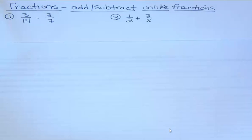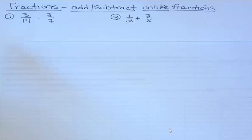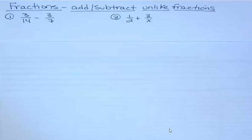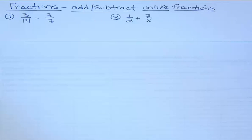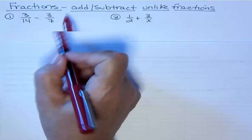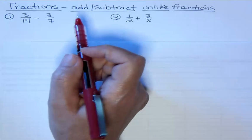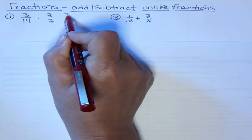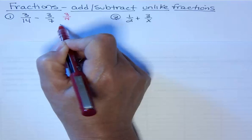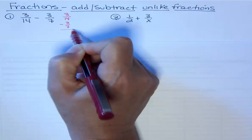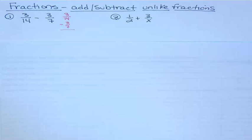So in the first two examples, I have 3/14 minus 3/7. They have the same numerator — that doesn't matter. What makes them unlike is when they have different denominators, and these definitely do. So I want to find a common denominator. Some people work their fractions vertically, and some people do them horizontally. I'll show you vertical, but I usually work them horizontal — you don't have to do it the same way I do.